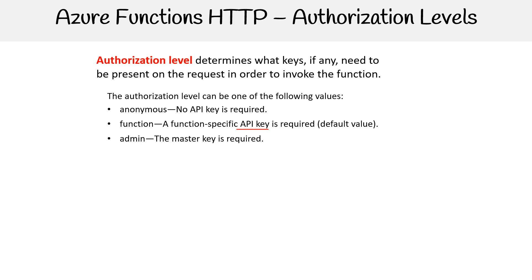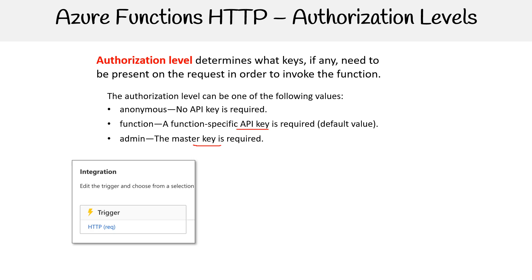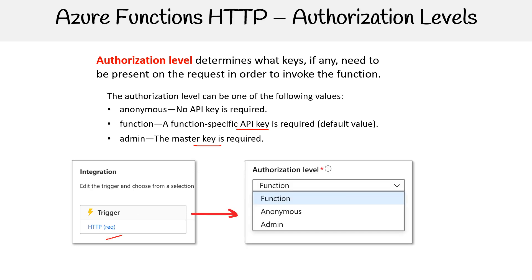Or you can have it so that it requires a master key — I'm just going to use the word main key. For integration, if you're trying to figure out how to change the authorization levels after you've deployed a function, you're just going to click on your HTTPS trigger, and from there you can switch the authorization level.